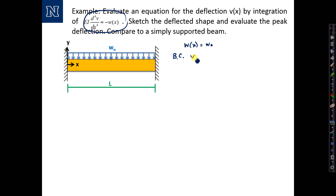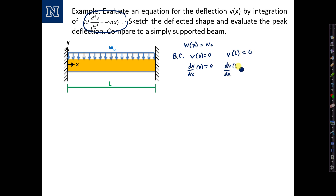We write them: V(0) equals 0 and dV/dx at 0 equals 0 — those are for the fixed support at the left end. For the one at the right end, we write V(L) equals 0 and dV/dx at L equals 0. Let's label the boundary conditions 1, 2, 3, and 4 for further use.